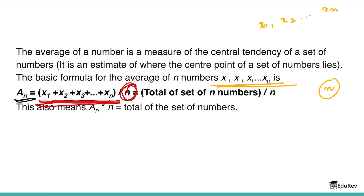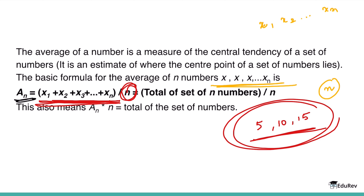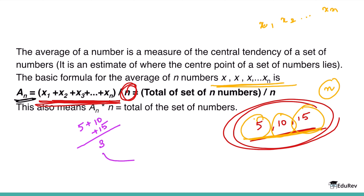Let me take an example. Suppose I have three numbers: 5, 10, and 15. To find the average, I add all three and divide by 3. So it's 5 + 10 + 15 = 30, divided by 3, which gives an average of 10.